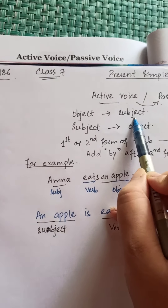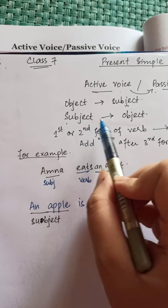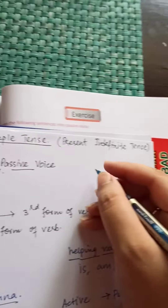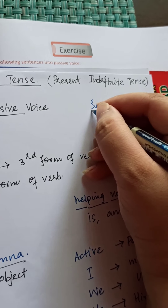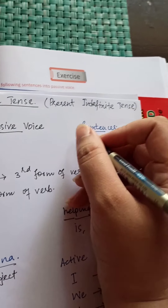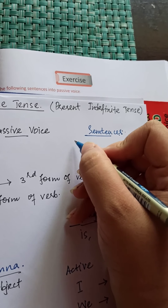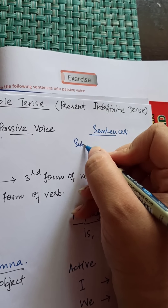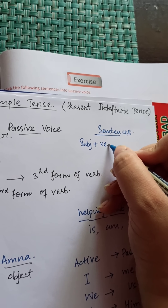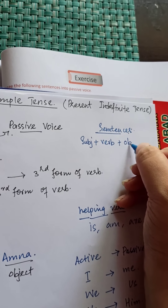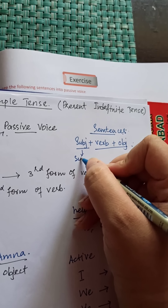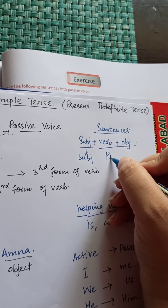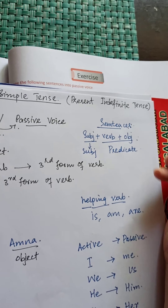Object ہمارے پاس subject میں change ہو جاتا ہے اور subject ہمارے پاس object میں change ہو جاتا ہے۔ ہم نے پڑھا تھا کہ ایک sentence کے تین parts ہوتے ہیں: subject + verb + object۔ Subject تو as it is رہتا ہے، verb اور object ہمارے پاس predicate کی category میں آ جاتے ہیں۔